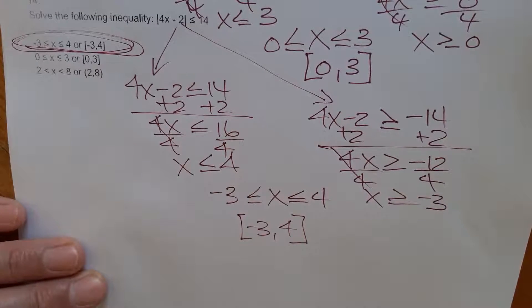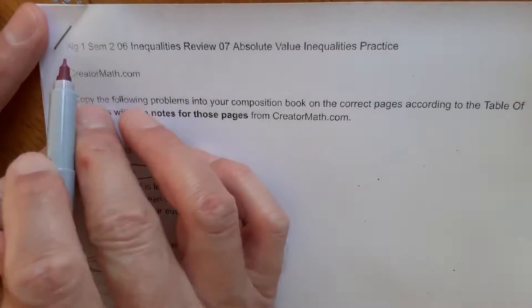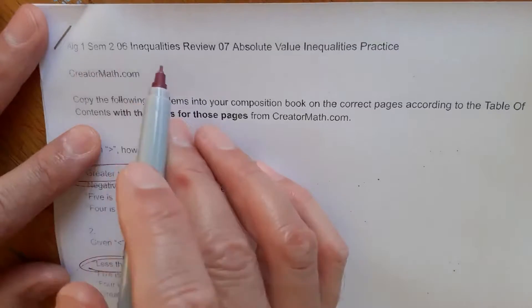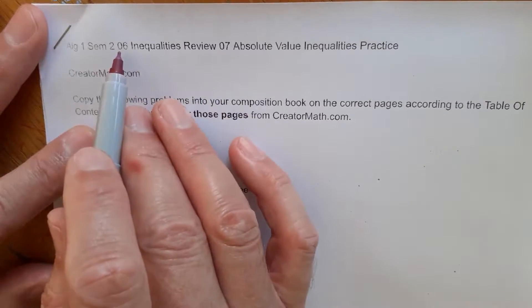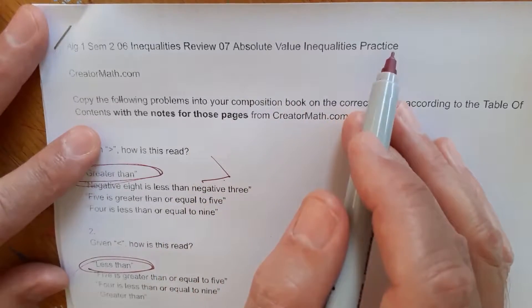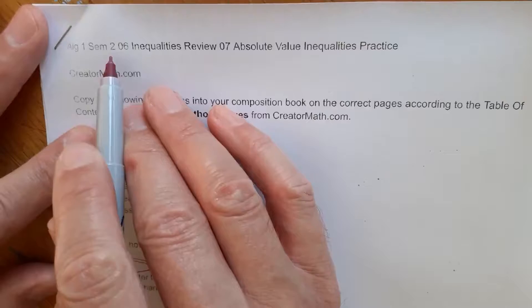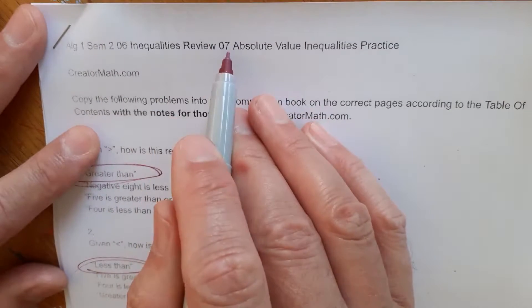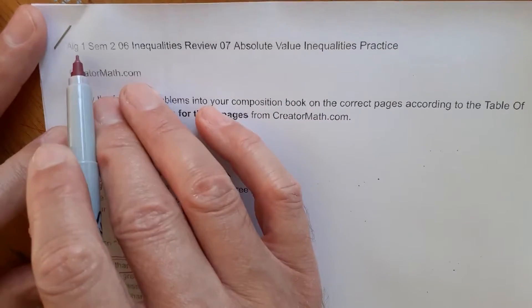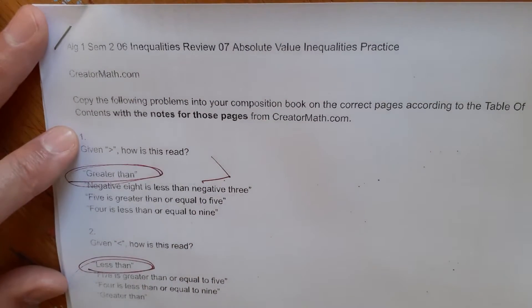Please make sure you're matching up the title of this video with the practice set you're doing, otherwise this isn't going to make much sense. This is Algebra 1, Semester 2. It's a unit called Inequalities Review, Unit 6. It's a lesson called Absolute Value Inequalities Practice, Lesson Number 7 — Unit 6, Lesson 7. It's on creatormath.com under the Algebra 1 tab. I hope this helps.